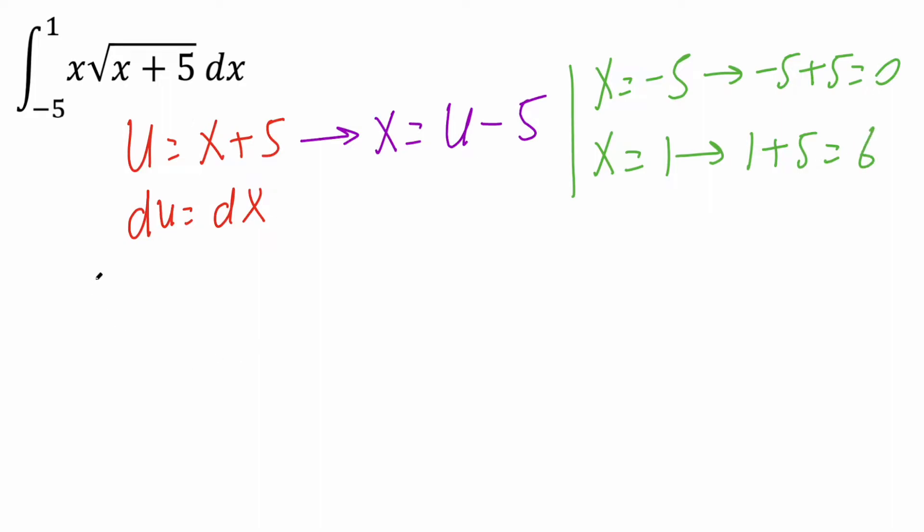Let's rewrite our problem. We have the integral; instead of -5, we're saying it's 0, and instead of 1, we're saying it's 6. Instead of x, we're saying u-5. Instead of x+5, we're going to say it's u, and the square root is the same thing as u^(1/2), so that's du.